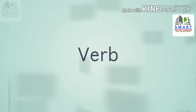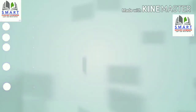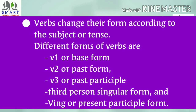You can also leave a comment below or email your suggestions to the email ID provided in the description. Now let's take a quick recap. We studied that a verb is either a main verb or auxiliary verb. Main verb shows physical or mental action. Auxiliary verb adds functional or grammatical meaning to the sentence. To be, to do, and to have are some auxiliary verbs, and these sometimes function as main verbs as well. Will, would, shall, should, can, could, may, might, and must are modal auxiliary verbs. Modal auxiliary verbs can never be used as main verbs. Verbs change their form according to the subject or tense. Different forms of verbs are V1 (base form), V2 (past form), V3 (past participle), third person singular form, and Ving or present participle form.